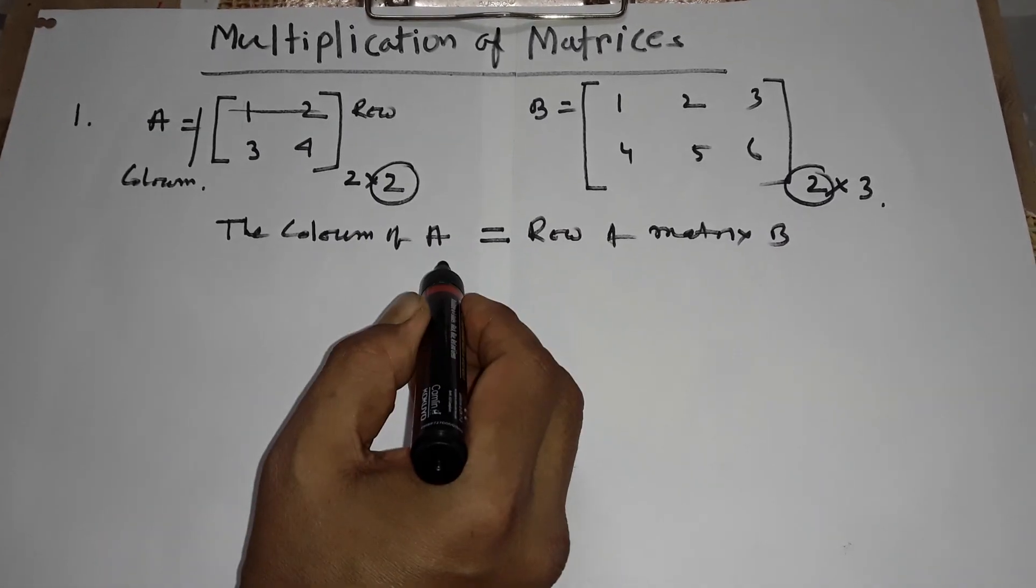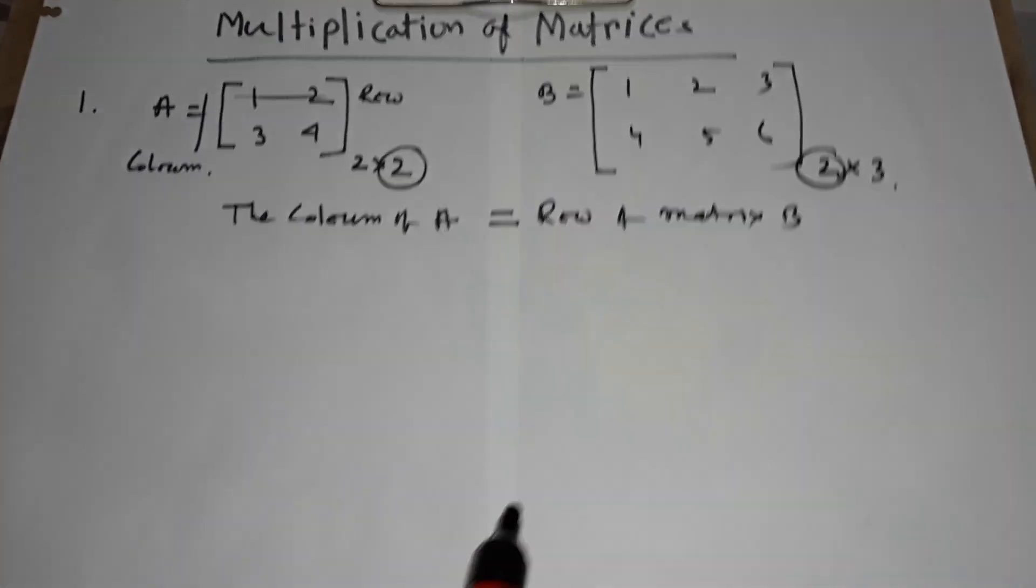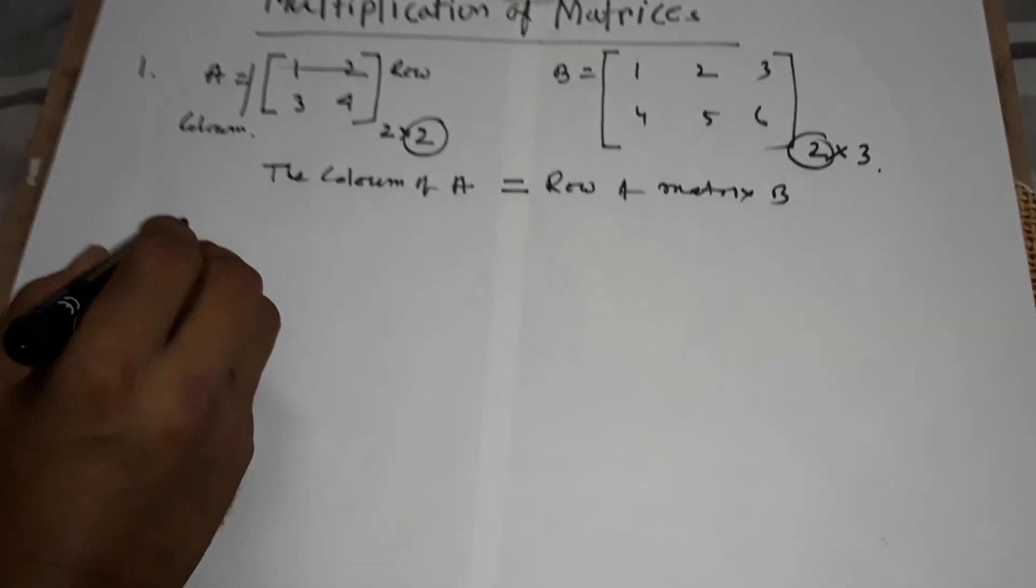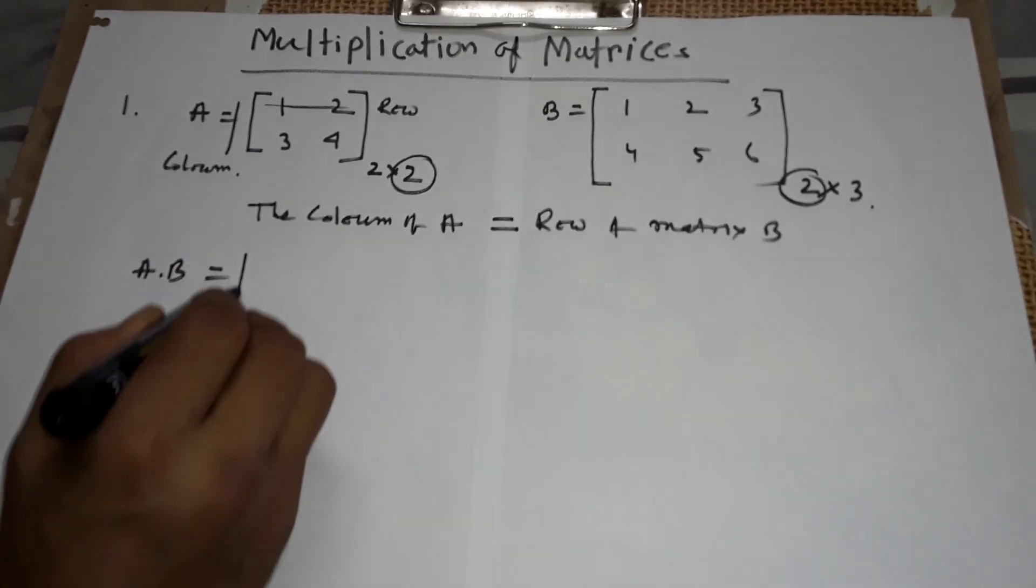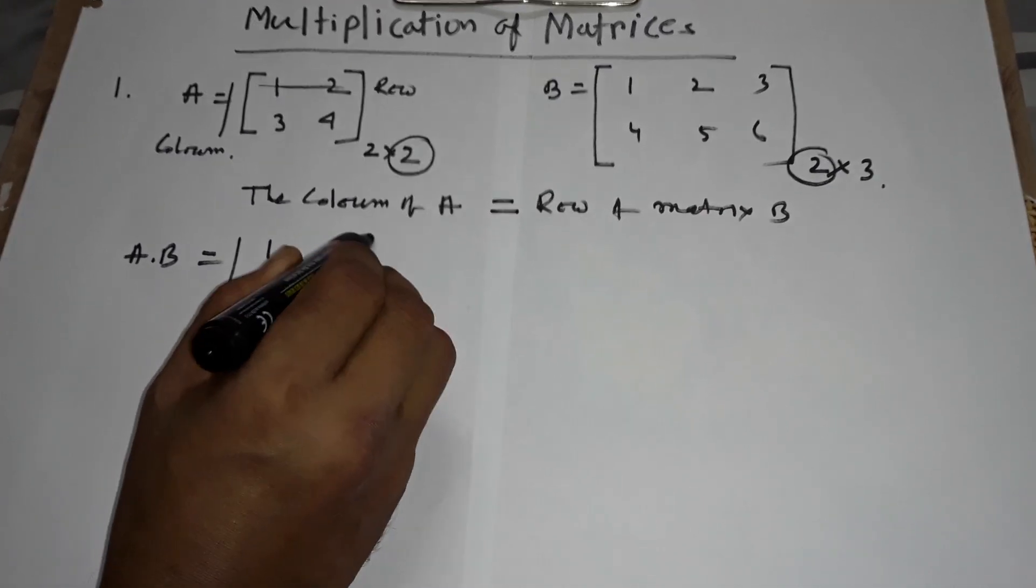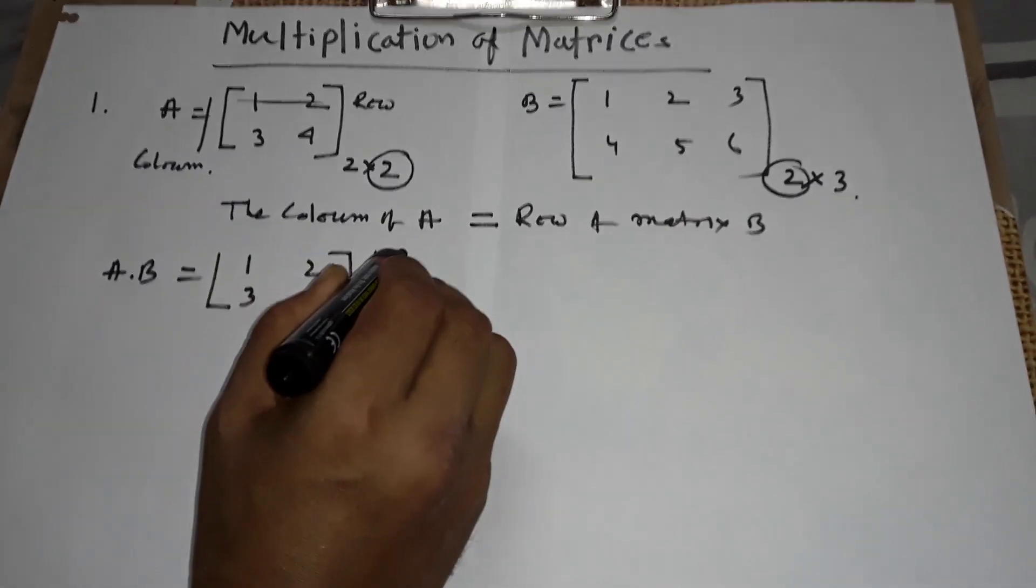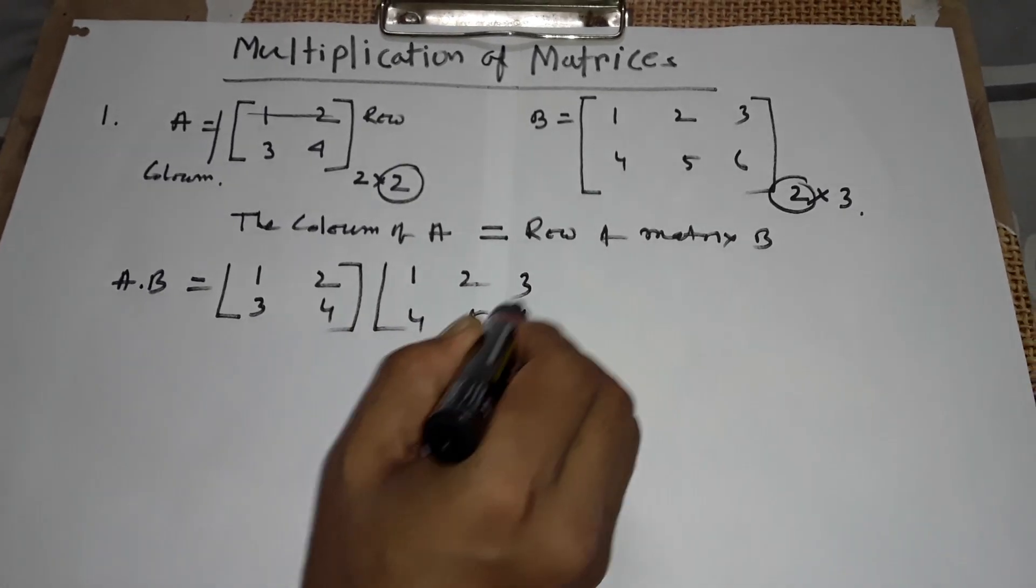Then we can multiply A and B. You see, A dot B equals 1, 2, 3, 4 times B matrix 1, 2, 3, 4, 5, 6.